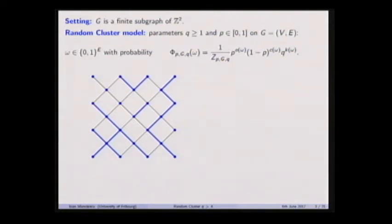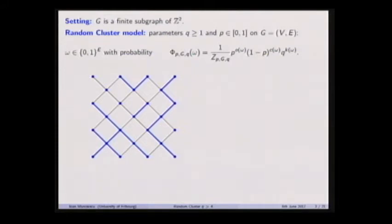We've seen a model called Bernoulli percolation where edges are independently open or closed with probability P. Physically, if you take them independently that makes the model easier to study. But physically it's interesting to have dependence. The natural way of introducing dependence: if you have a configuration of open and closed edges, you assign a weight which is P to the number of open edges, 1 minus P to the number of closed edges, and a parameter Q to the number of connected components.